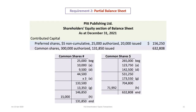Next up is common shares. Bringing back the T-accounts for common shares — both the number of shares and the dollar value — there are 131,850 shares at a carrying value of $632,808. So for common shares, we show 300,000 authorized, 131,850 issued, and a carrying value of $632,808.